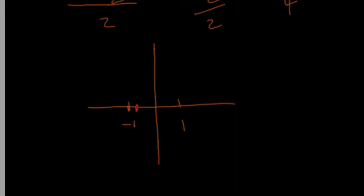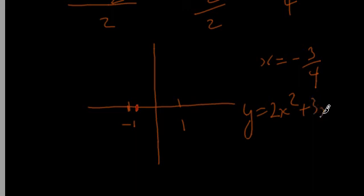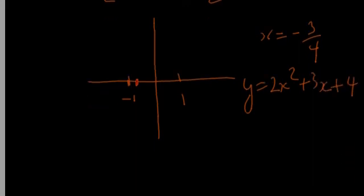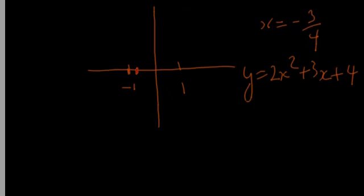And so to find the y coordinate of our vertex, we plug in this x = -3/4, and we plug that into our parabola, which is just y = 2x² + 3x + 4. Let's go ahead and do that.